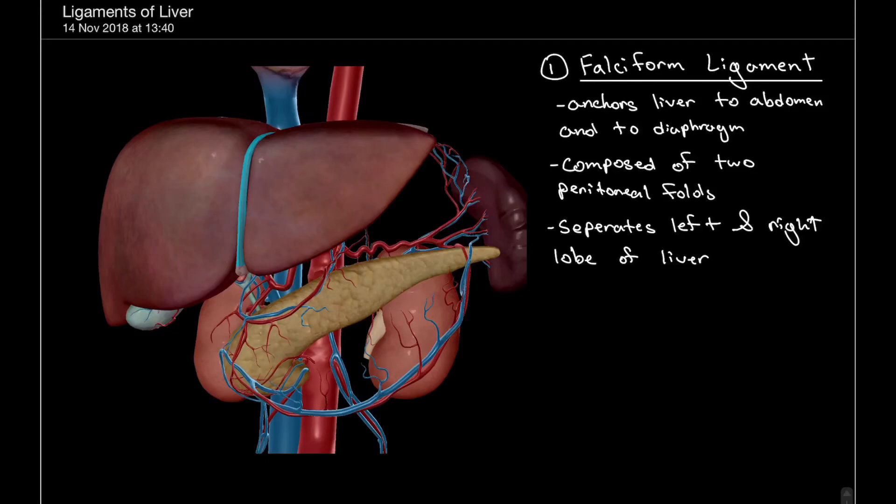Here we have an anterior view of the liver. We can see the left and right lobes and the falciform ligament, which is that anterior ligament that separates the left and right lobes of the liver. This ligament is comprised of two peritoneal folds that come together and give structural rigidity to the liver and anchors it to the abdominal wall and diaphragm.